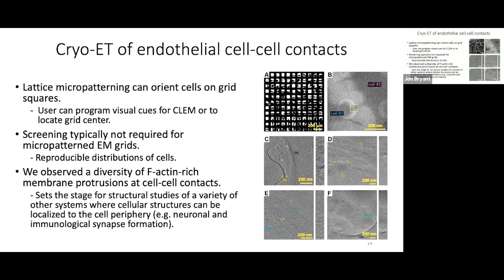When we performed cryo-electron tomography using this lattice micropatterning technique, we found we could actually change the orientation of cells on the grid squares — the bottom rows have cells oriented vertically, while the top rows have cells oriented horizontally — potentially a way to program visual cues for correlative light electron microscopy or to locate the grid center. In our hands, lattice micropatterning led to such a dramatic increase in ease of data acquisition that once we'd established optimal cell-seeding density and freezing parameters, we didn't need to screen our vitrified grids prior to imaging, as is typically required — we always had a sufficient number of cellular subregions suitable for imaging.